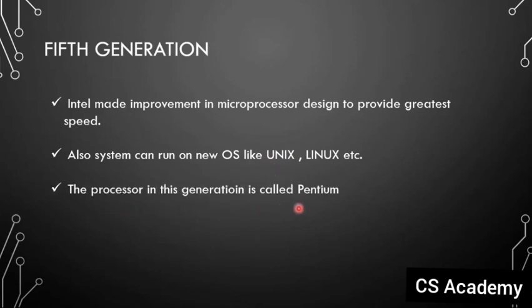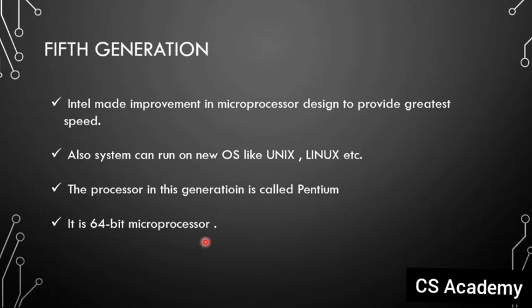The microprocessor of the fifth generation is called the Pentium. The fifth generation microprocessor is called Pentium. It is a 64-bit microprocessor. The fourth generation was 32-bit, and Intel improved to 64-bit configuration in the fifth generation.